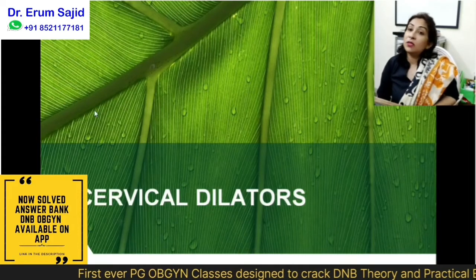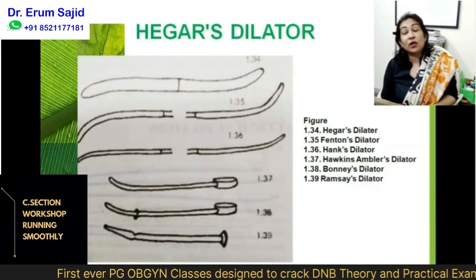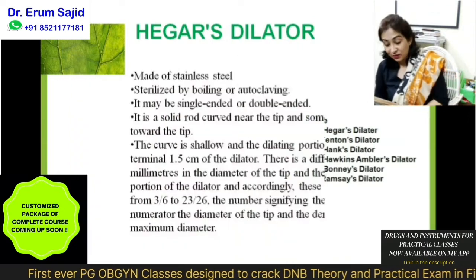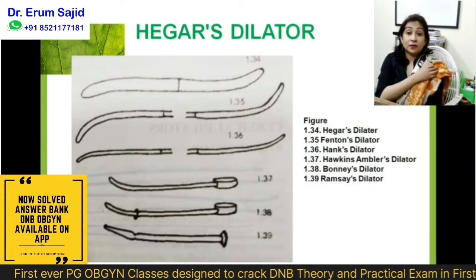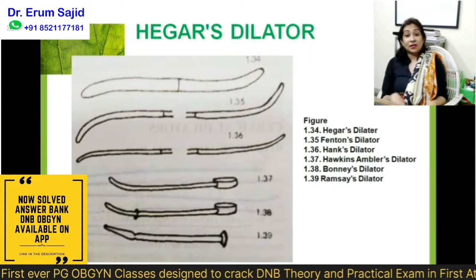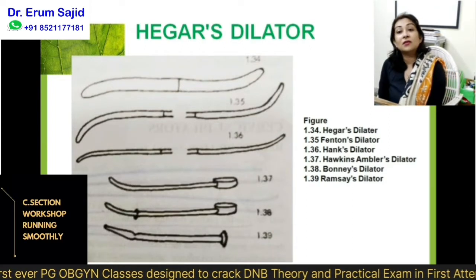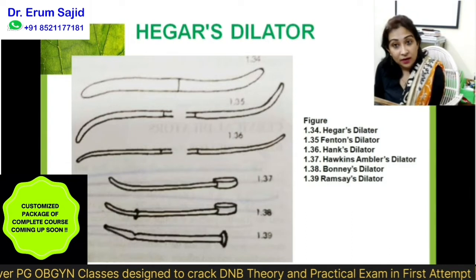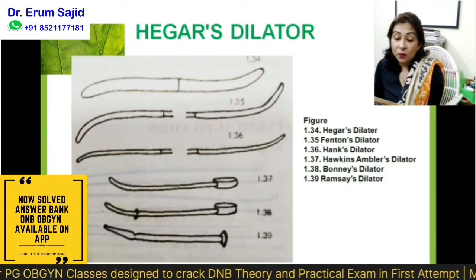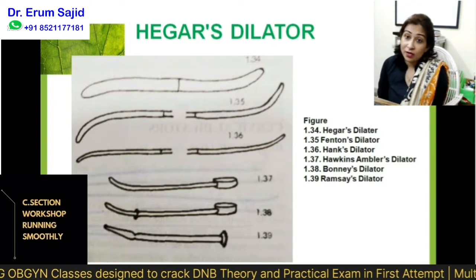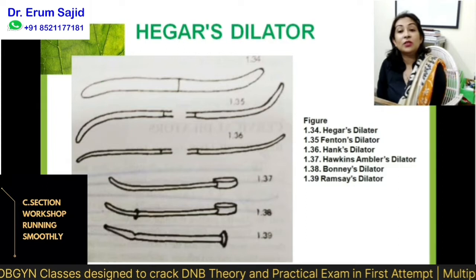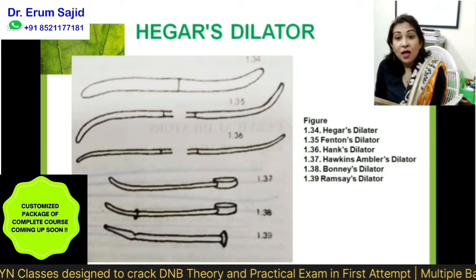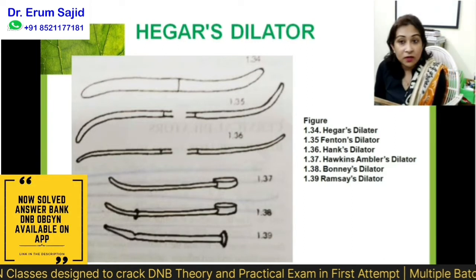The first instruments are the dilators. Many times examiners would love to ask you how to set the trolley for D&C. This was a question asked to one of my colleagues during the practical exam and she fumbled. So even if you become a consultant someday, the nurse will come and ask you to help set the D&C set. You should be very well versed with the instruments in the cesarean set, the D&C set, and instruments for hysterectomy — because nobody is going to pardon you for that.